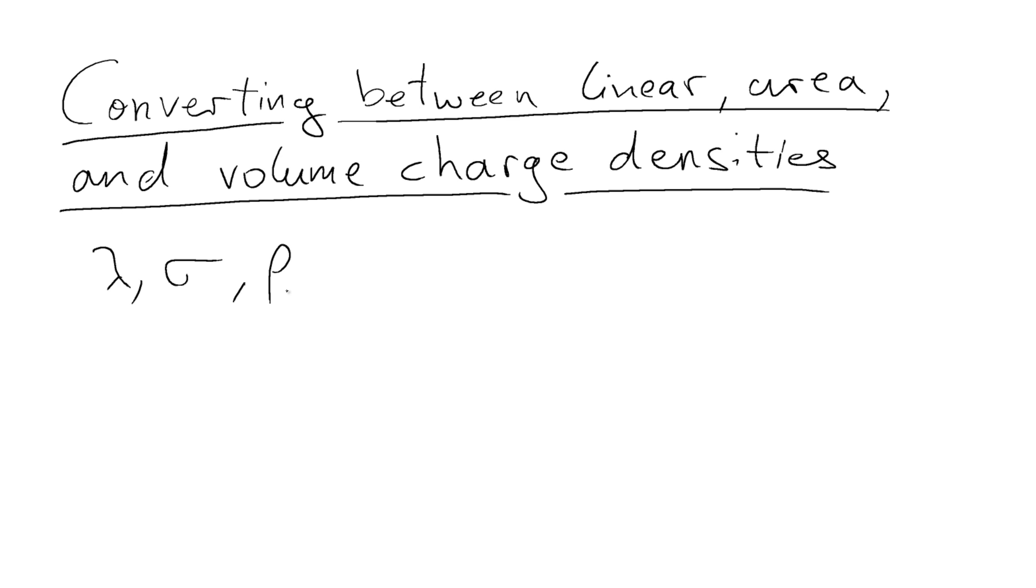We're going to have to reference their mathematical definition and I'm going to write them down really quickly. Lambda is defined as you may have expected as the charge Q divided by the length element. But the easiest way to think about it is to actually think of the total charge Q and the total length of the object across which you can measure that linear charge density lambda.